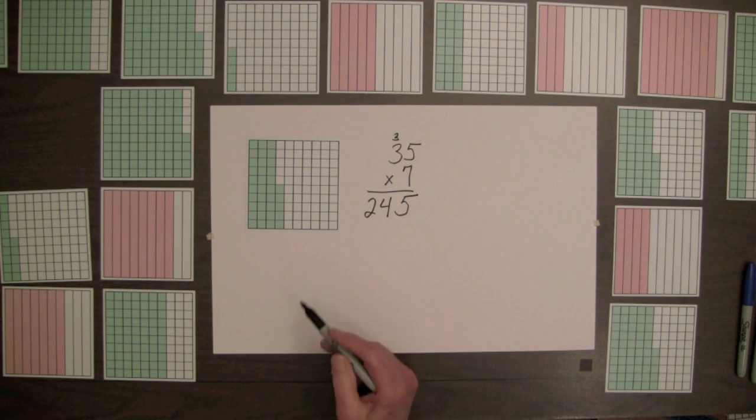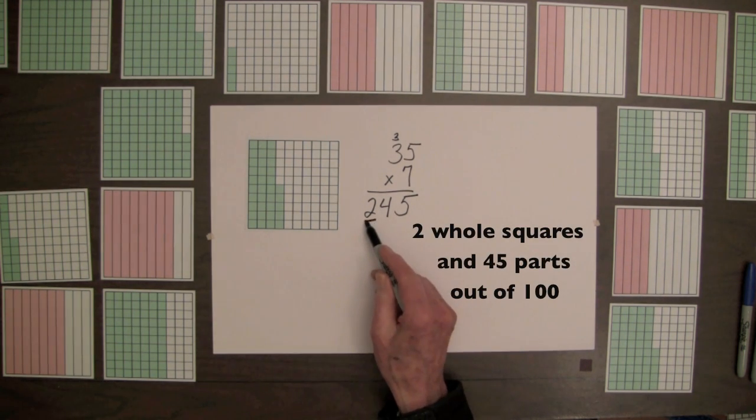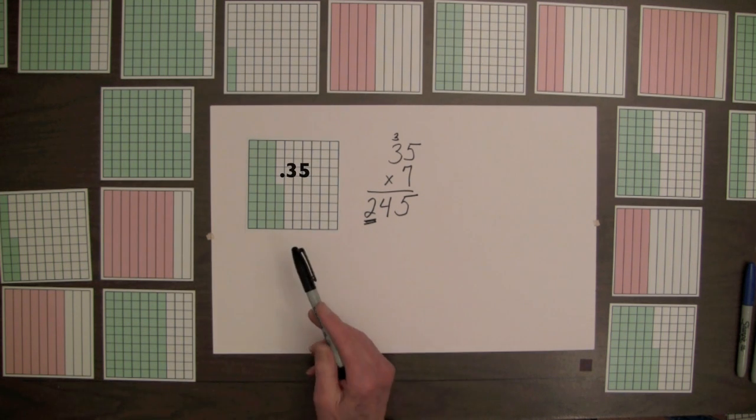Since one whole square has 100 parts, there will be 2 whole squares and 45 parts out of 100.